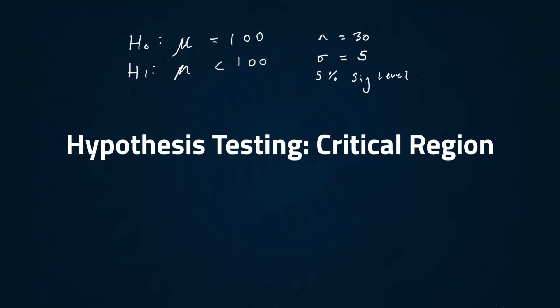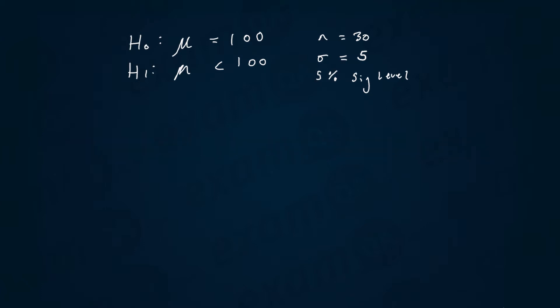Today we're going to be going over the hypothesis testing critical region method. In a critical region method, you're given your hypotheses — the null and the alternative — the number of people in the sample, which is 30 in our case, a standard deviation of 5, and the question asks you to work out the critical region of this hypothesis test to the 5% significance level.